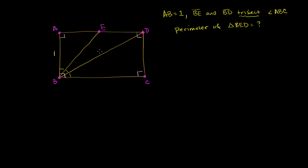At first this seems like a pretty hard problem, because you might ask: what is the width of this rectangle? How can I even start? They've only given us one side. But they've actually given us a lot of information, given that we know this is a rectangle with four sides, four 90-degree angles, and parallel sides. Opposite sides of a rectangle are the same length, so if this side is 1, then this side is also 1.